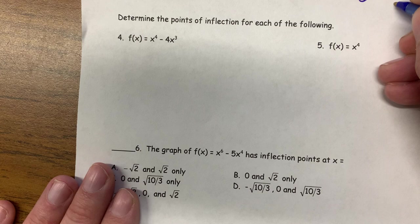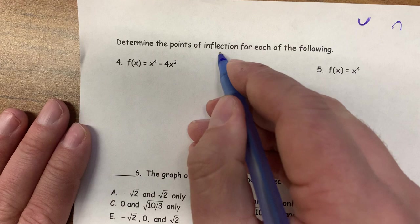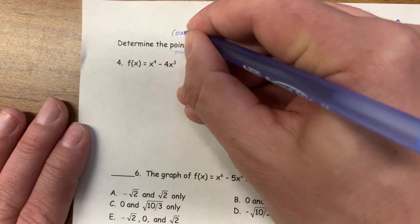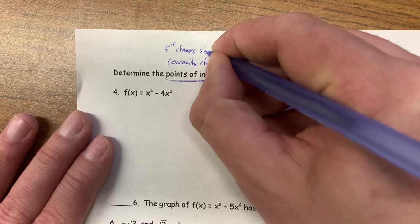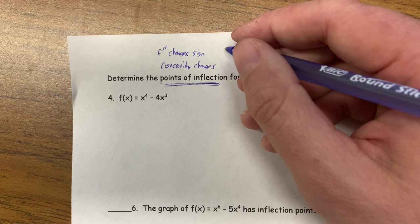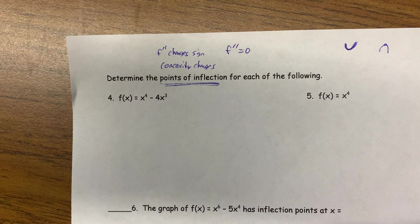Now, determine the points of inflection. A point of inflection is where the concavity changes, and the easiest way to check is that f-prime-prime changes sign. We've got to be careful: the number one mistake students make is they ask where is f-prime-prime equal to zero and assume that's where the concavity changes. Well, it might be — but you need to actually check to make sure it does change signs. Another way is if f-prime changes direction, but that's often harder. We'll find f-prime-prime and make a sign chart.